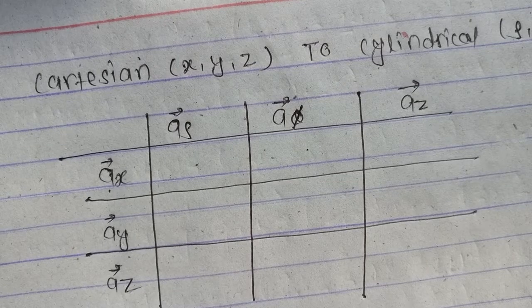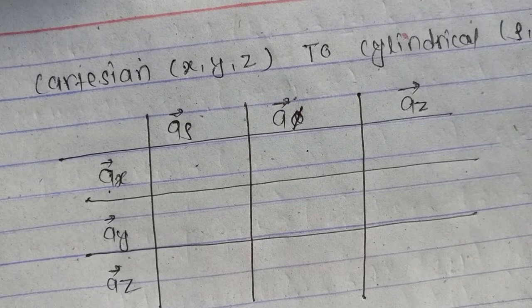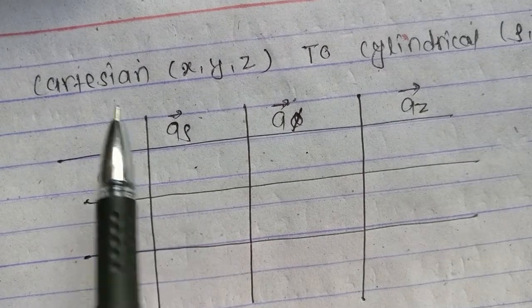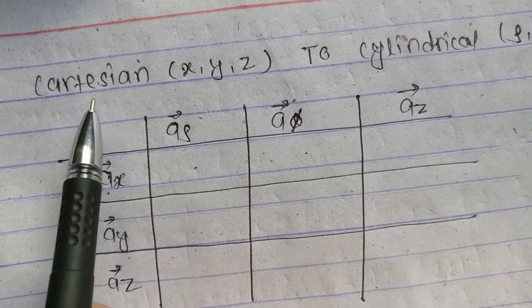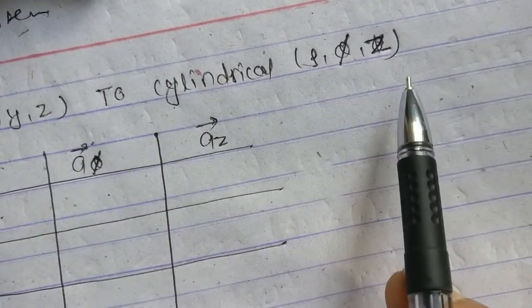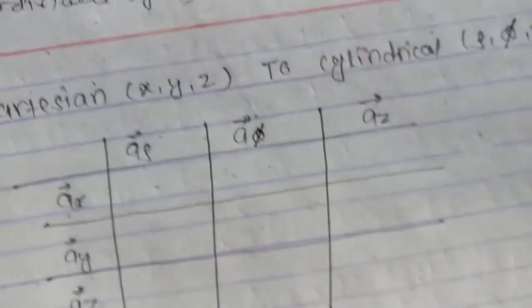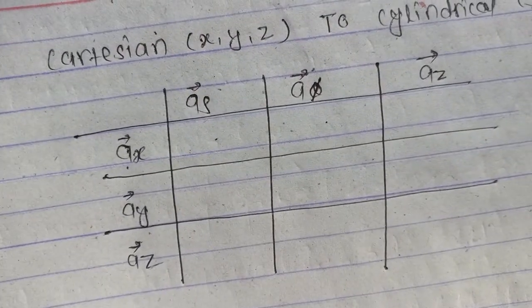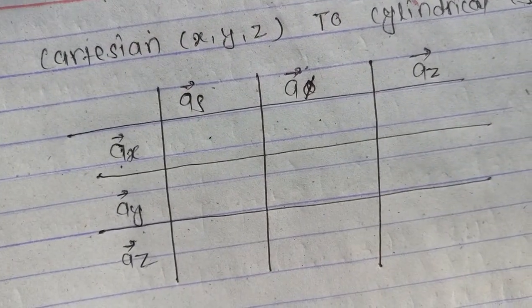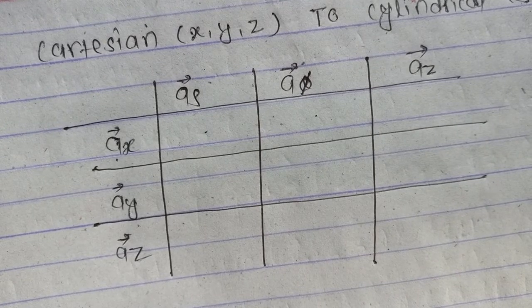Hello everyone. Before knowing the formula for dot product, you have to know about the ordered triplet. For Cartesian: x, y, z. For cylindrical: rho, phi, z. And for spherical: r, theta, phi. Here is a very simple trick to know the formula of dot product.